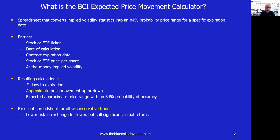All five of these data points can be accessed from a typical option chain. Now, what kind of results will this spreadsheet give us? First, it will tell us the number of days to expiration if taken through expiration of that specific contract. Then it will give us the approximate — not exact, but darn close — price movement up or down during that specific contract. And that will then lead us to the expected approximate price range. I'm going to show you shortly why that will be an 84% probability of accuracy — there's a rationale behind it.